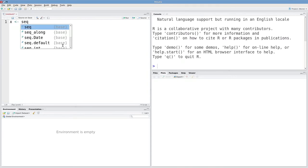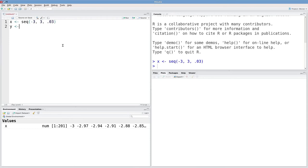For my x values, I want to have a sequence from negative 3 to 3, and I'll increment this sequence by 0.03 every time. For my y values, I'll think of some interesting looking function like e to the negative x squared all times sine of x cubed.